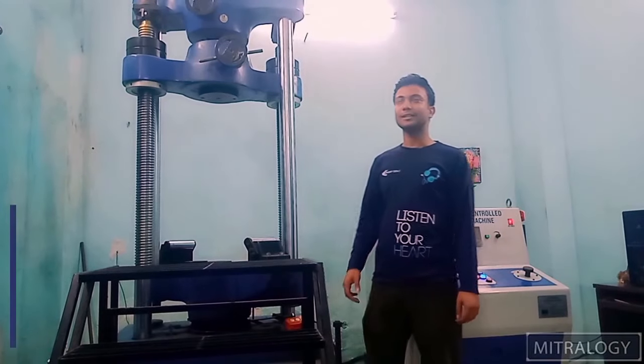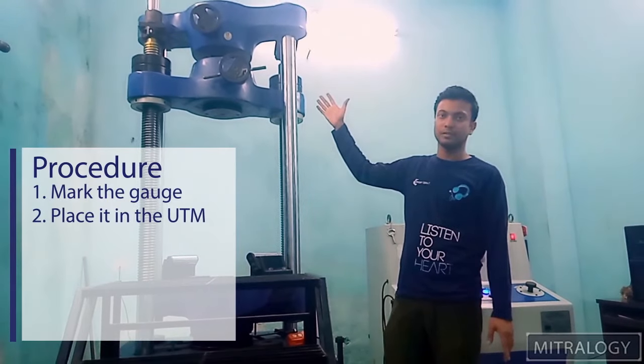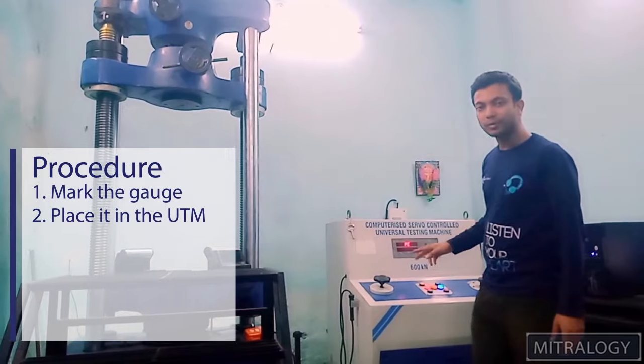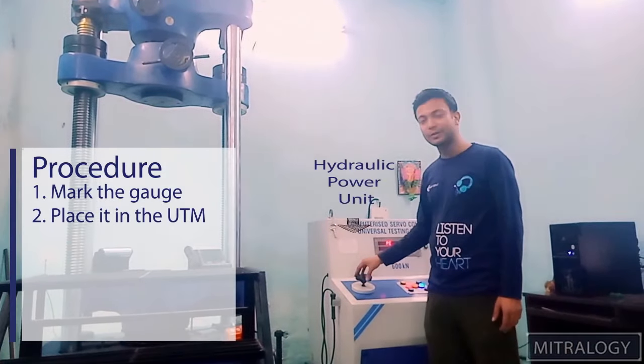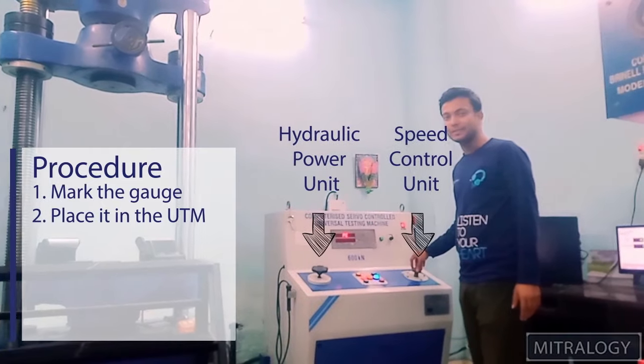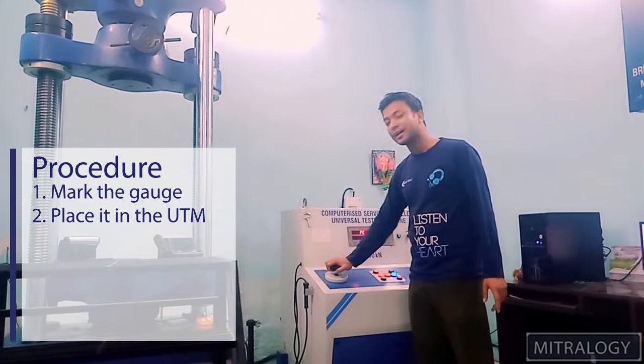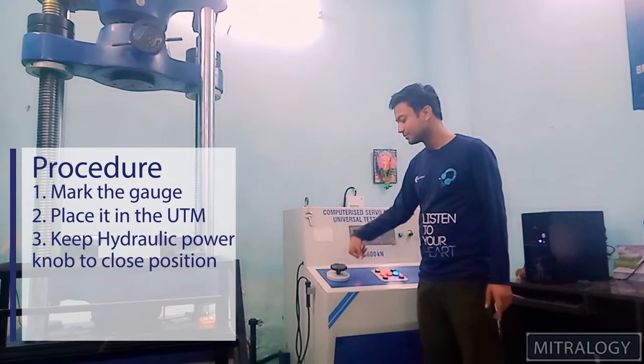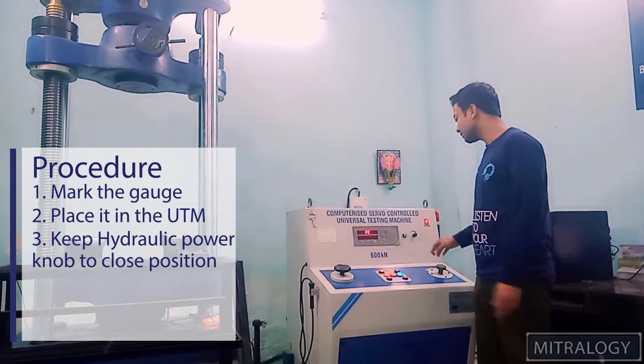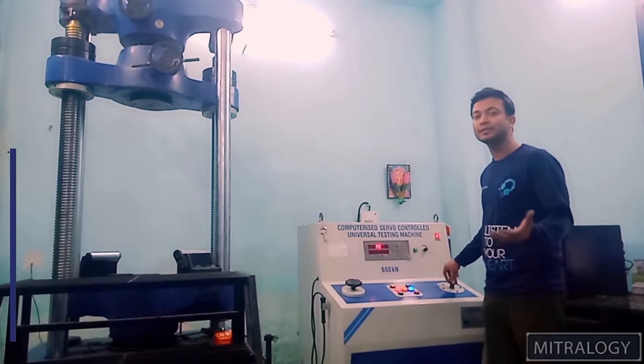As you can see, we put the sample in position. And there is a control unit. There are two main components in the control unit. One is hydraulic power unit and one is speed limit unit. Before starting the test, we have to close the hydraulic power unit. And after starting the test, we will increase the power gradually depending on how much speed we need.